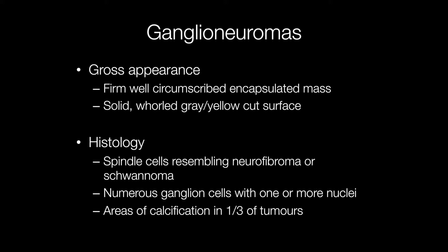Histologically they are composed of spindle cells resembling neurofibromas or schwannomas. There are numerous ganglion cells with one or more nuclei, and sometimes there are areas of calcification in approximately a third of tumours.